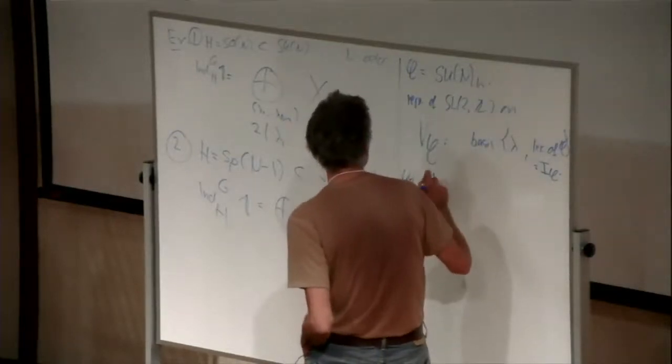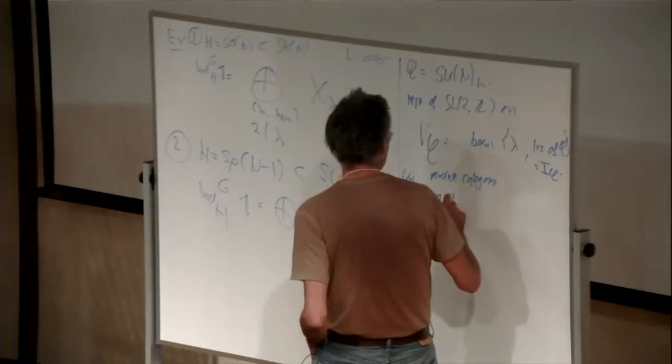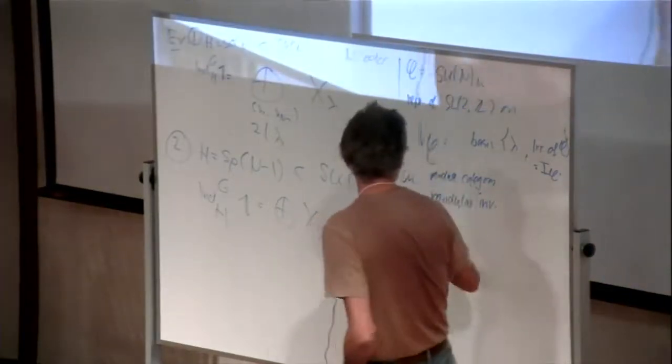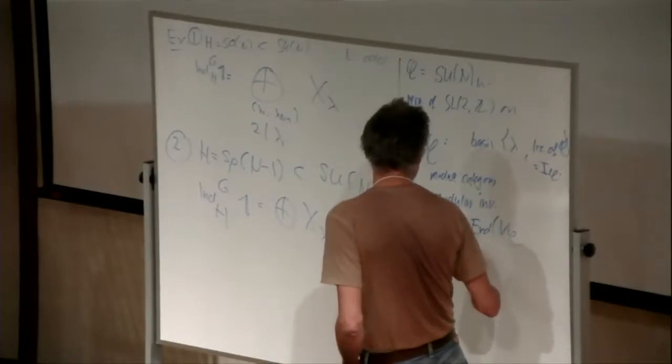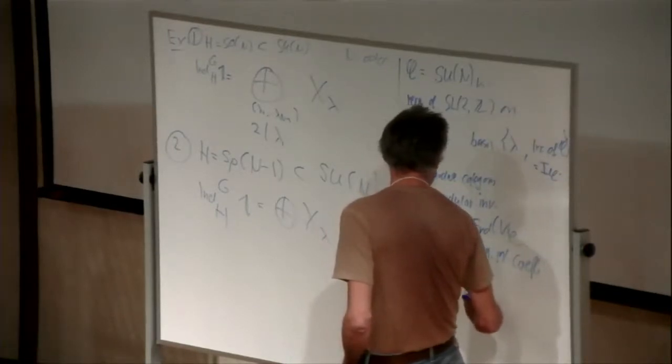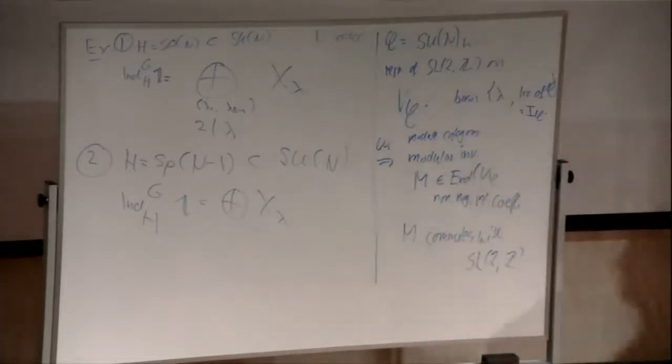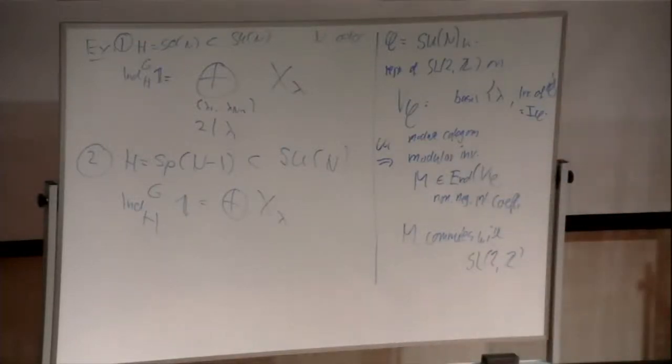If M is a module category, then it's known that there exists a modular invariant, which is just a matrix M in N times C, which has non-negative integer coefficients, and M commutes with the SL(2,C) action. There's a little bit more, but I'm not going to avoid that.